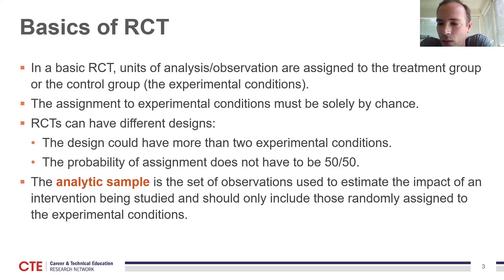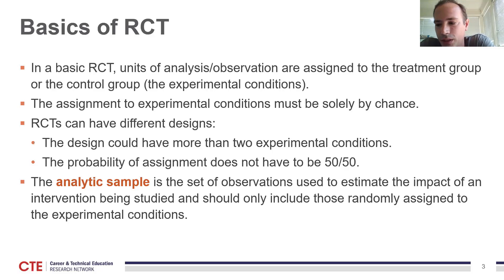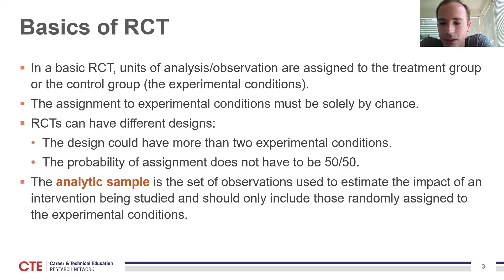For example, in one study — Hamilton 2019 from North Carolina — rising ninth graders interested in attending an information technology focused career academy were randomly selected from among the pool of interested students who applied. An experimental design could have more than two experimental conditions. If multiple components of the program are being studied, a multi-arm design allows the researcher to estimate the separate impacts of each program component. You have to make sure that you're sufficiently powered to detect differences between those arms.